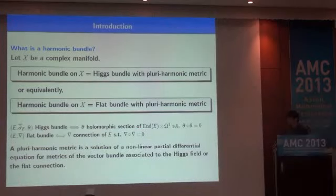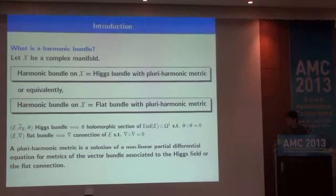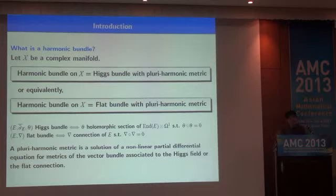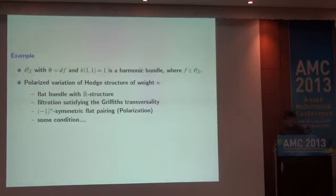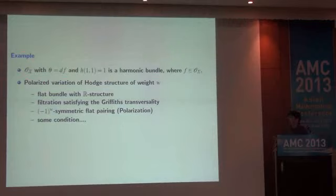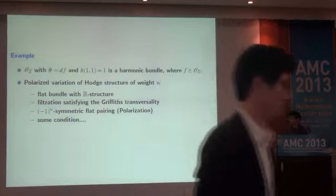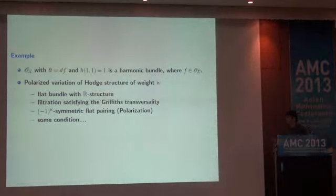A flat bundle is a vector bundle with a flat connection. We have a nonlinear partial differential equation for metrics of the vector bundle associated to the flat connection or Higgs field, and solutions are called pluri-harmonic metrics. In this sense, a harmonic bundle can be regarded, roughly, as a solution of some nonlinear partial differential equations. The simplest examples are the harmonic bundles associated to harmonic functions: for any harmonic function, its differential is the Higgs field of the structure sheaf, and the trivial metric gives the pluri-harmonic metric of this Higgs bundle.